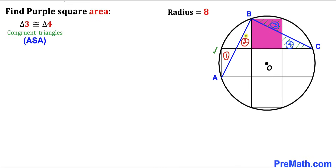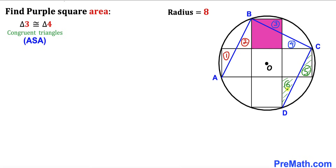Exactly the same way that we proved triangles one and two, we now connect point C with point D, as you can see here, and focus on the next two right triangles. These are labeled triangle five and triangle six. We conclude that triangles five and six are congruent as well, according to the Angle-Side-Angle congruency theorem.